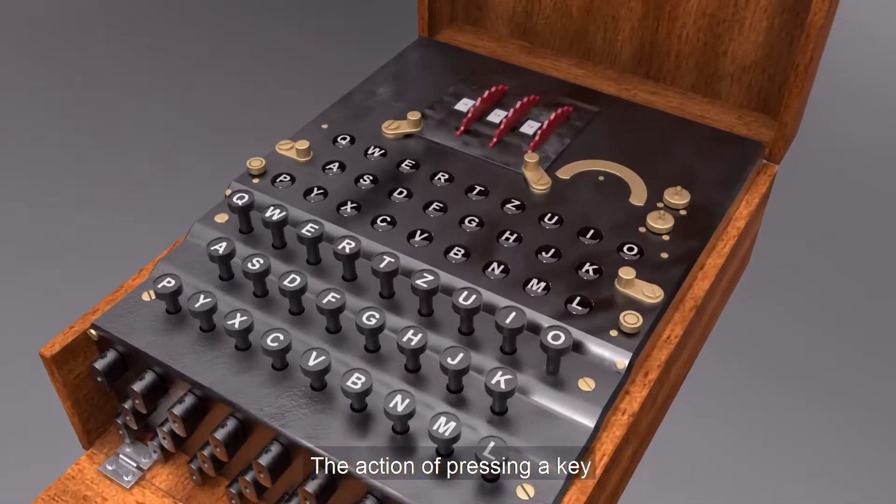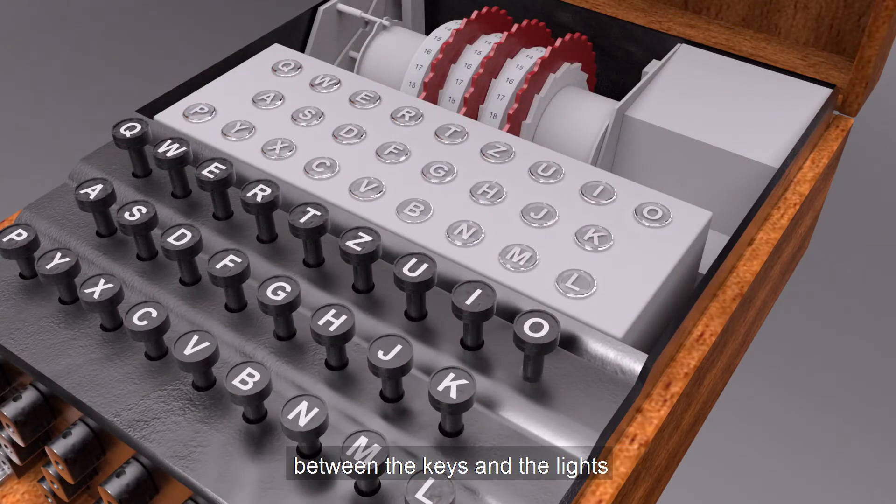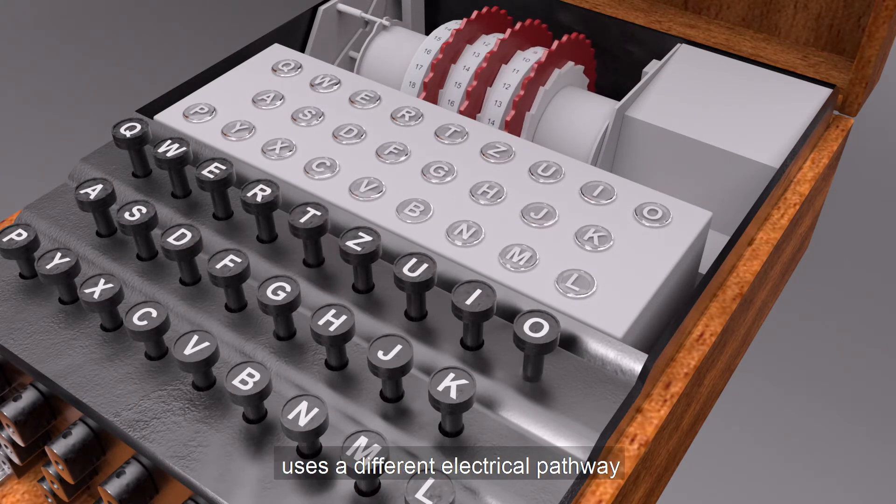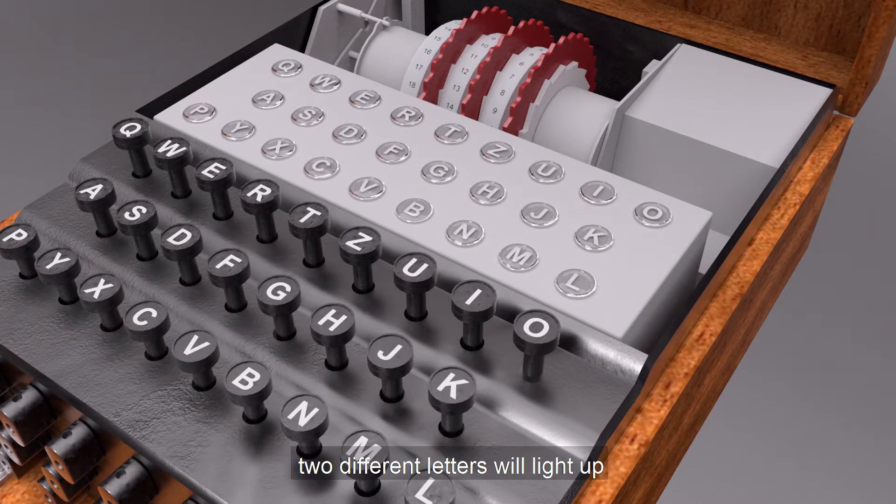The action of pressing a key also moves one or more rotors, and changes the electrical connections between the keys and the lights, so that the next key press uses a different electrical pathway. If you press the same key twice, two different letters will light up.